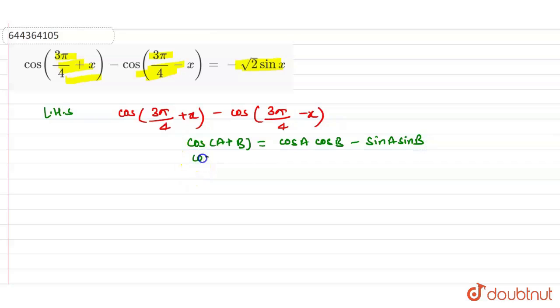And we know another identity cos(a - b) is equal to cos a cos b plus sin a sin b.